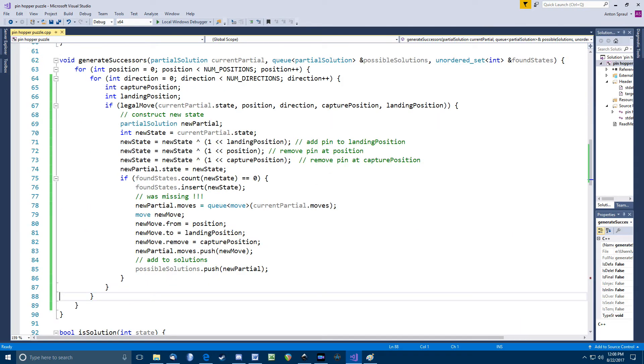Now, we get to the heart of the program. This function is given a particular state and generates all of what we would call the successor states. The program maintains one queue of all the states it has reached to this point, but not processed, and this function is going to add the new states it generates onto the back end of that queue. The outer loop runs through all 15 positions on the board. For each position, we look at all six directions. We make a call to isLegalMove, and for legal moves, we do some bitwise operations to clear the current position and the capture position, and to put the peg in the landing position. XOR, that is exclusive OR, is used to flip the bits.